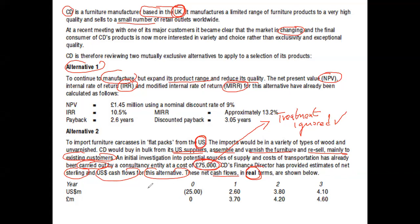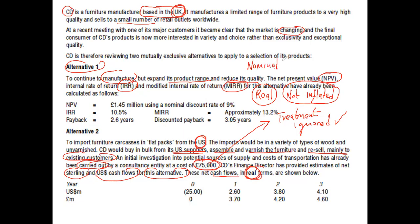The FD has provided estimates of net sterling and US cash flows. These net cash flows are in real terms. In the language of inflation, what does 'real' mean? It means that inflation is not included — not inflated. When the figures are inflated, how are they described? They are in nominal terms.